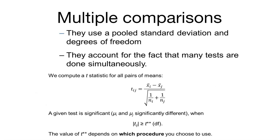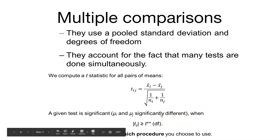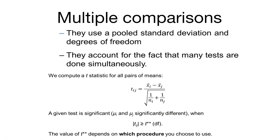A little bit about how they work: they use a pooled standard deviation and a pooled degrees of freedom, not unlike what the ANOVA process does or some of our t-tests. They account for the fact that multiple tests are being done simultaneously, going back to that experiment-wise error rate. They compute a t-statistic for every pair of means, comparing sample i versus sample j, where X-bar sub i is the mean from sample i and X-bar sub j is the mean from sample j, with potentially different sample sizes.